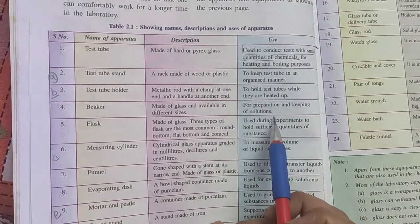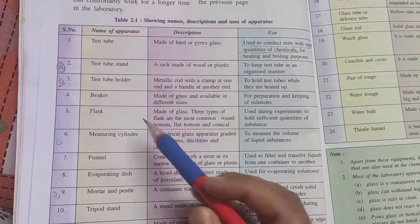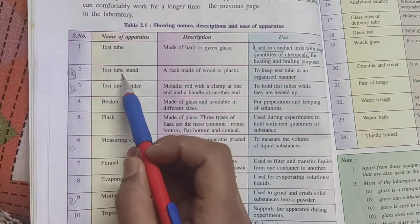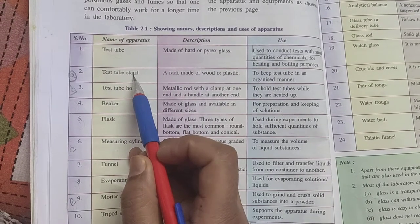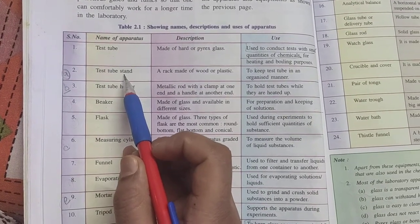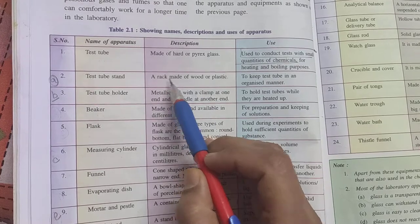In this question you have to write down the description. So A is test tube stand. What it is made up of? Test tube stand is a rack made up of wood or plastic. This you have to write down.